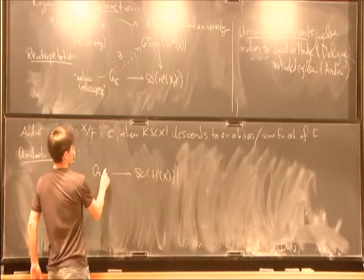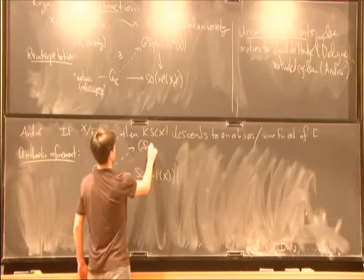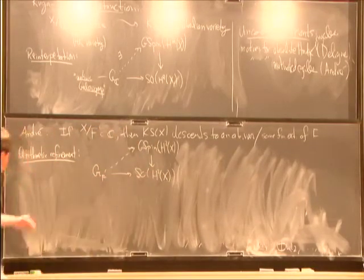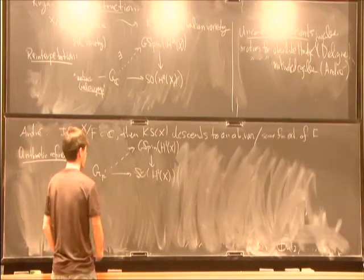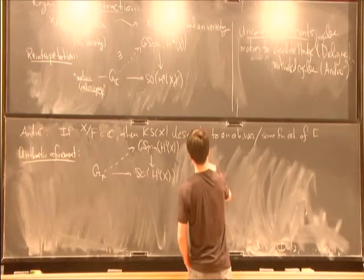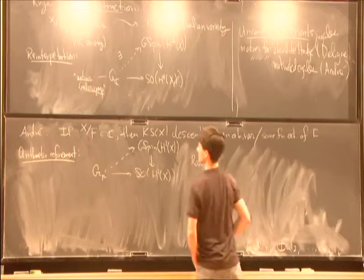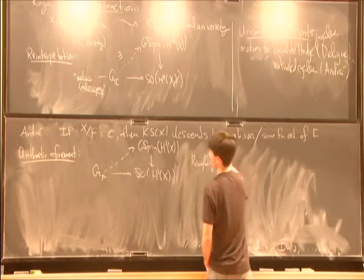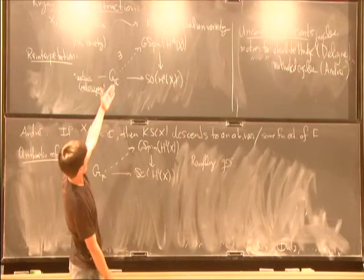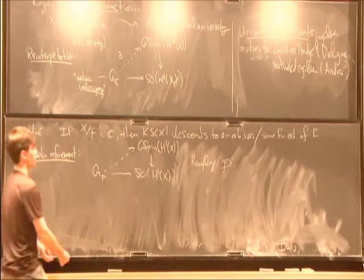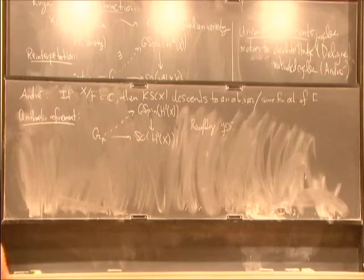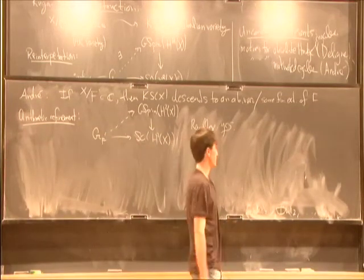And you can ask if, over F, there's a lifting at the level of motivic Galois groups. And essentially there is. You have to introduce coefficients. There's a little bit of a technicality in formulating it, but roughly the answer to this question is yes. You can get a complete arithmetic refinement of this construction and get a motive over F that really becomes the Kuga-Satake motive. It's not going to be just an abelian variety, it will be more complicated, built out of abelian varieties and Artin motives.